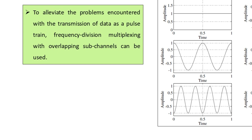As illustrated, we have the serial binary data stream A0, A1, A2, A3, A4, A5, followed by the baseband serially transmitted signal at the receiver with some distortion. Then we see signals generated by modulating a set of sub-carriers by the digits of the pulse train — the six samples A0 through A5 — showing amplitude versus time variation in all plots.